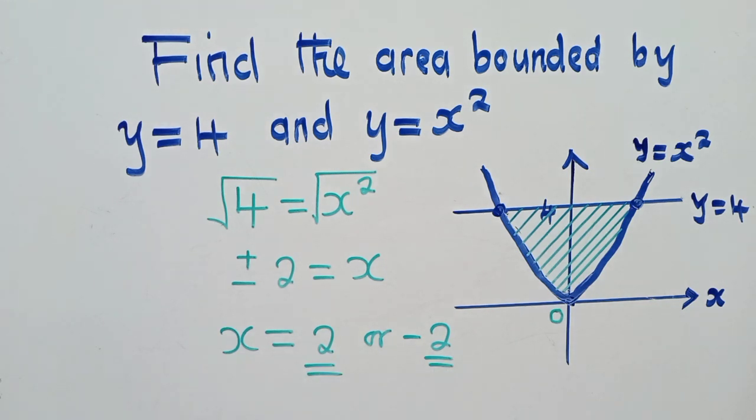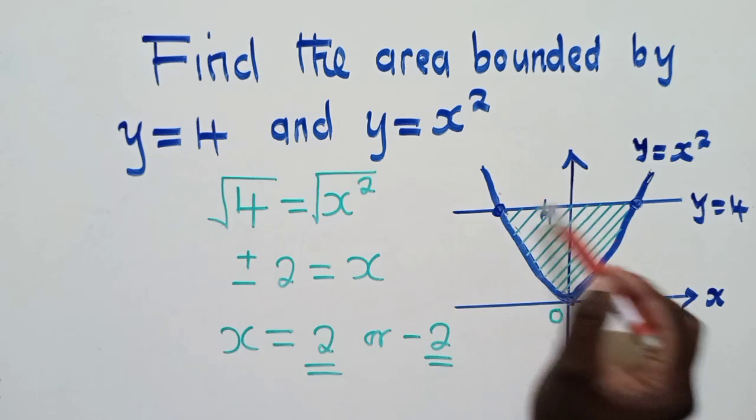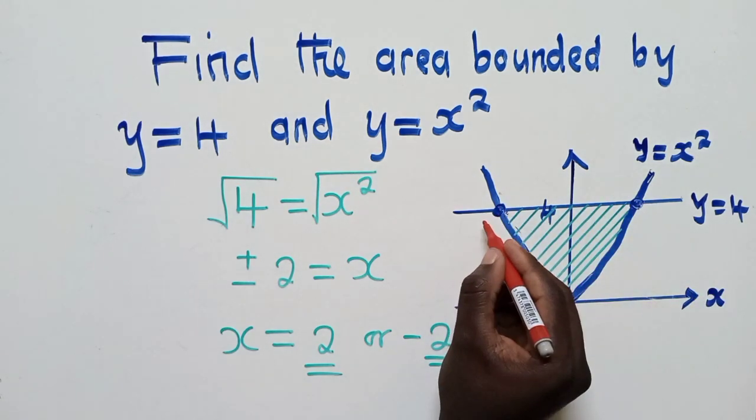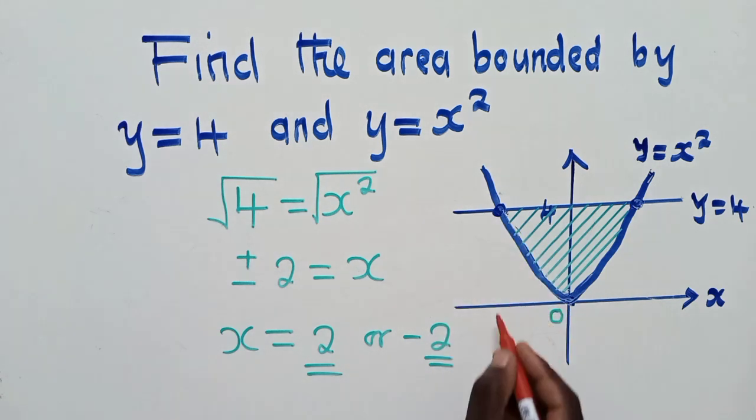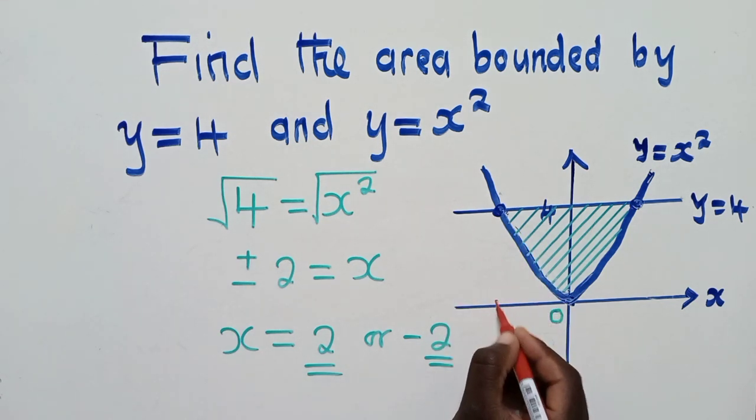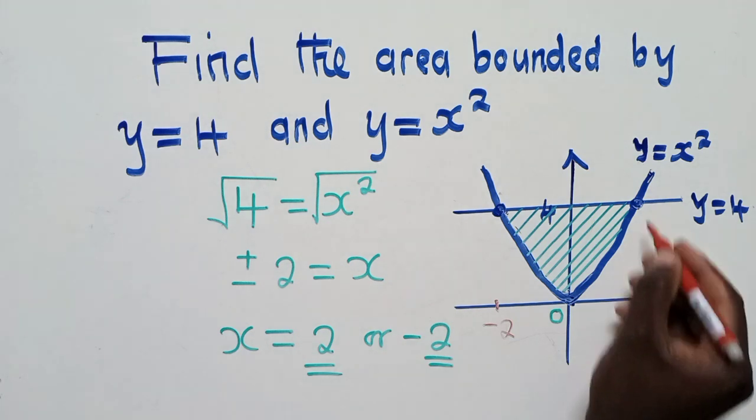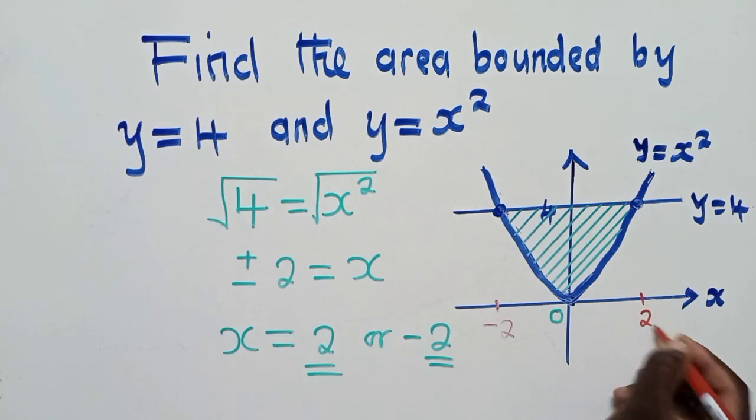So these are the two values of x. So now, why am I solving all this? Why am I doing this? It's because I want to come and find the intersecting points. So here, this is to the negative side. So meaning here, it's a negative 2. And here, it's positive 2.